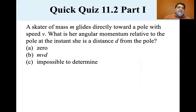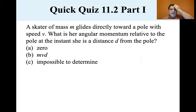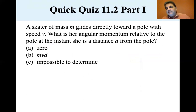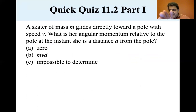Quick quiz: A skater of mass M glides directly toward a pole with speed V. What is her angular momentum relative to the pole at the instant she is a distance D from the pole? Is it zero, MVD, or impossible to determine? Since her radial vector is in line with her velocity, it's equal to zero.